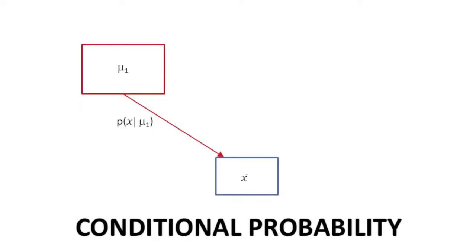This is called a conditional probability as it gives the probability of a certain event, namely obtaining a sample with mean X̄ subject to another condition, namely that the source of that sample had a mean μ1.